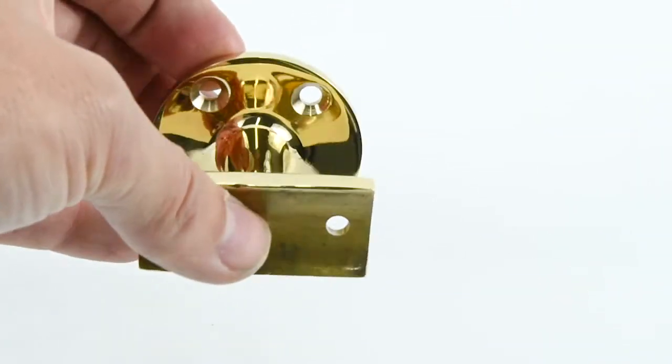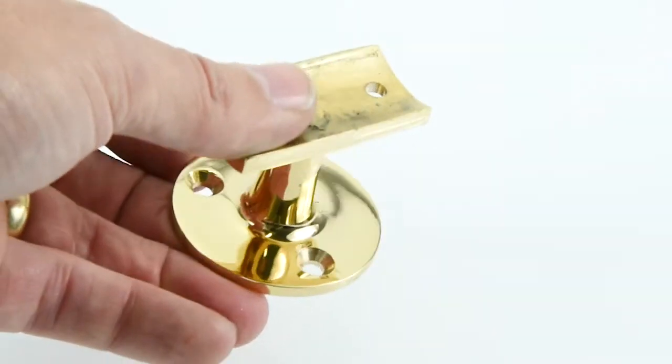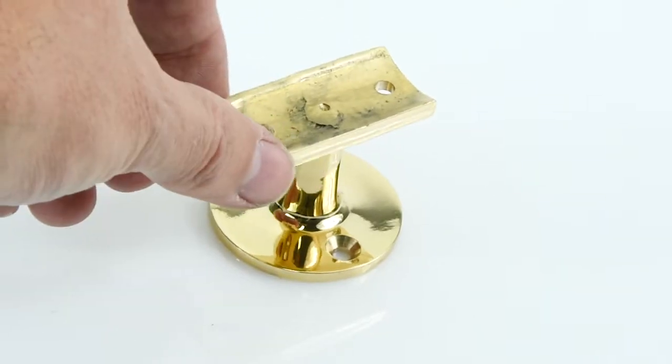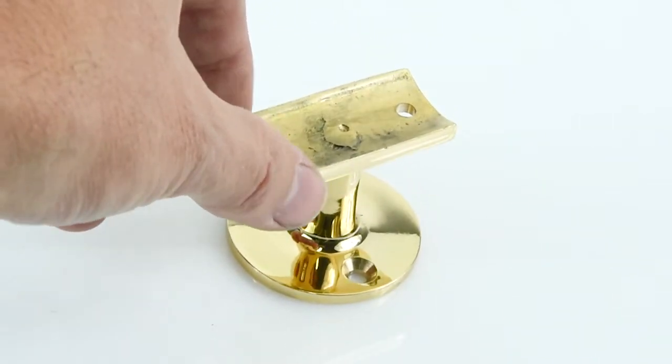It'll come with all the screws as well that you'll need to fix it, and all the screws will be done in the same finish that you have your handrail bracket in. So in this case they'll be brass screws, but they might be chrome plated or nickel plated screws.